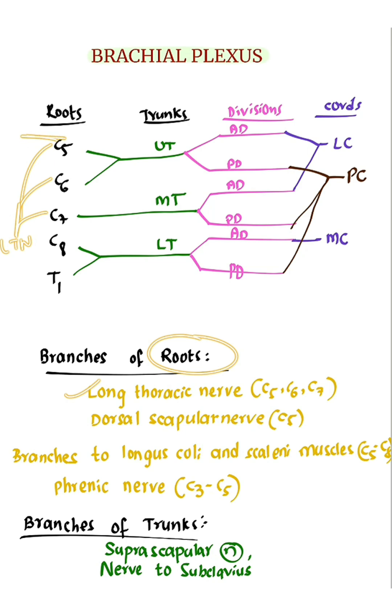Dorsal scapular nerve from C5. Branches to longus colli and scalene muscles from C5-C8. Phrenic nerve from C3-C5.